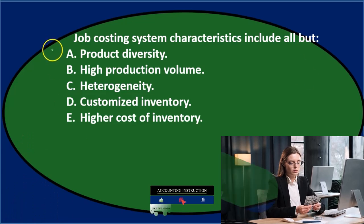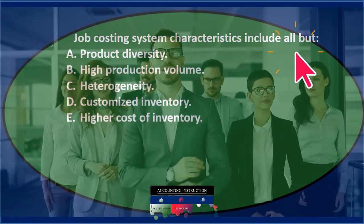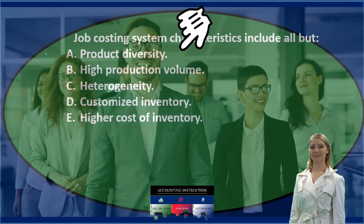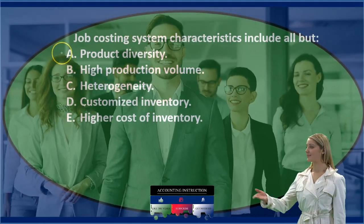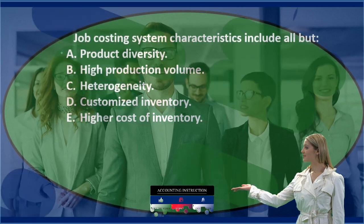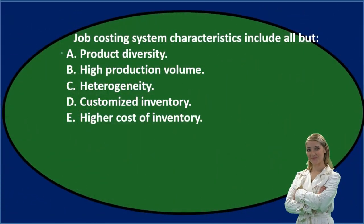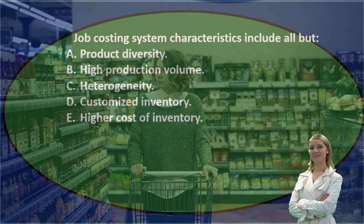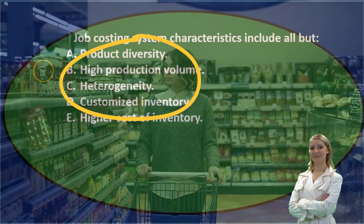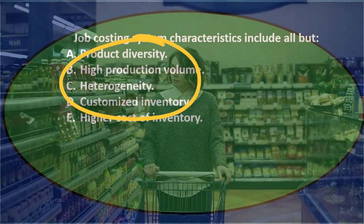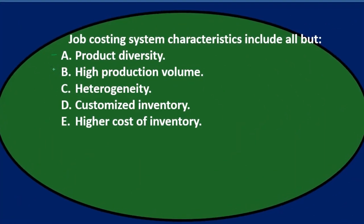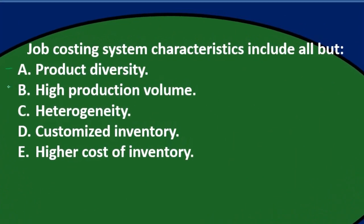Job costing system characteristics include all but — we're looking for the exception. Option A, product diversity — we might not know exactly what they're getting at, so I'll keep that for now. Option B, high production volume — that kind of depends; some job cost systems may have higher production volumes than others.